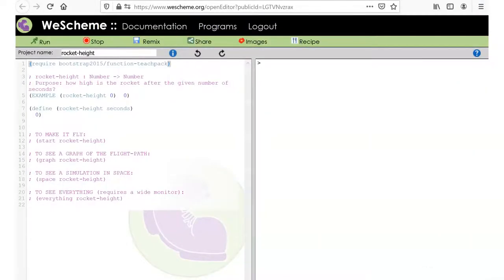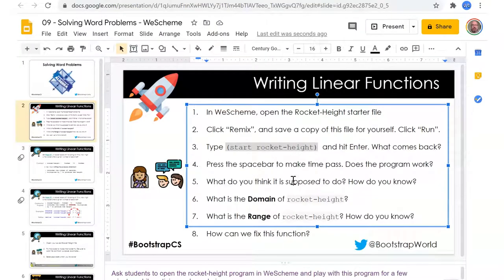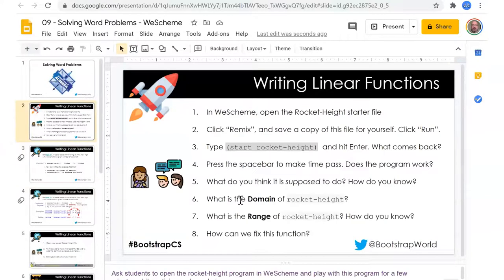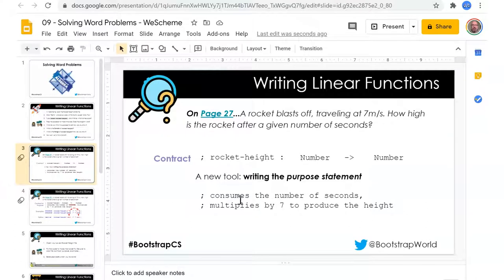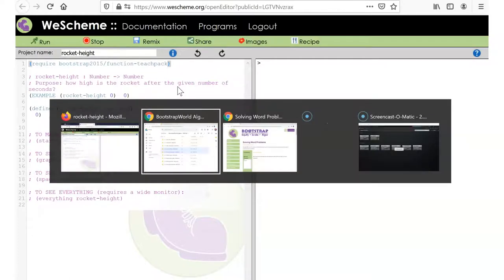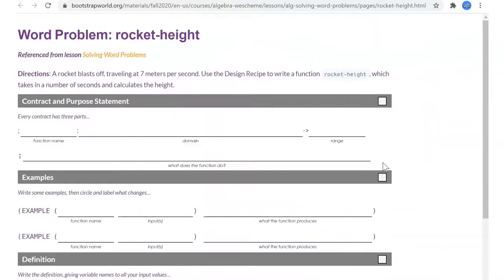Then I name that right. Rocket dash height. Click Remix. Start rocket. Space bar. Love the rocket. Domain range. Can we fix it? So there's something wrong with it. Page 27.